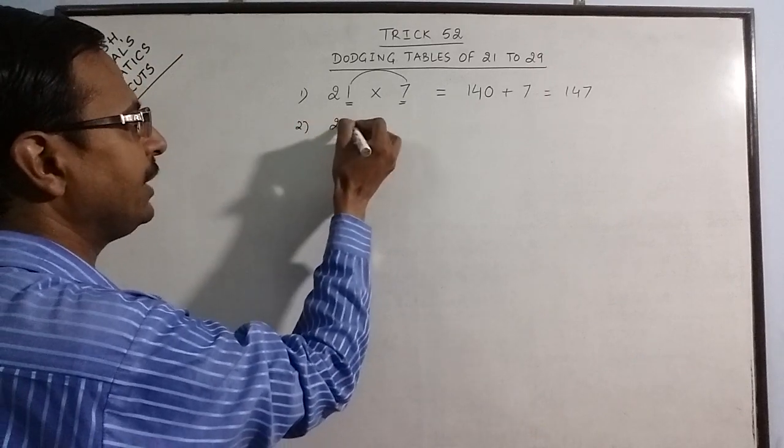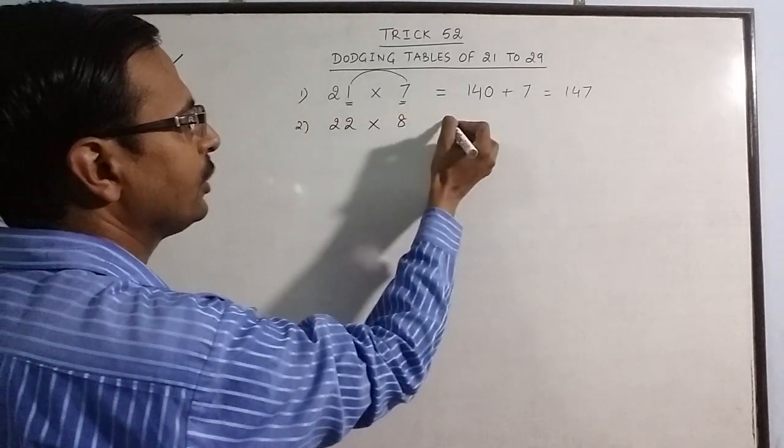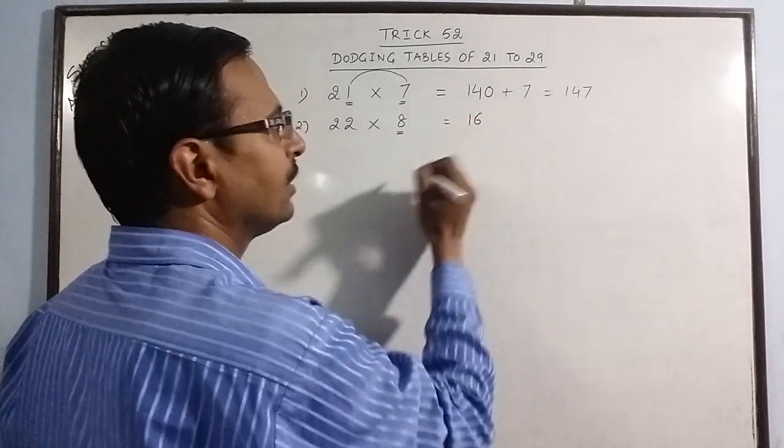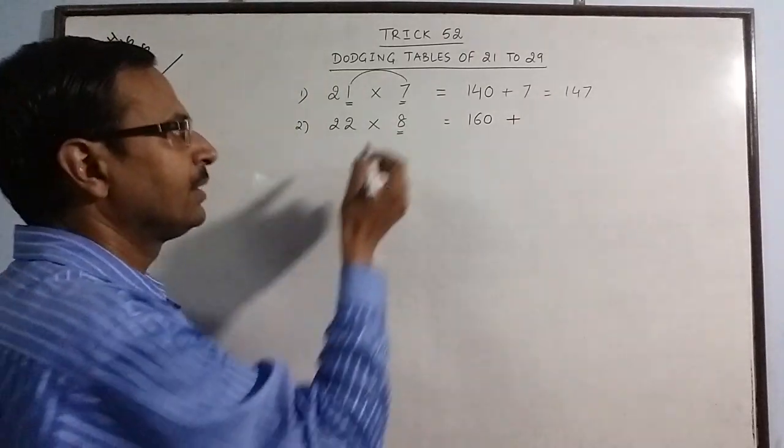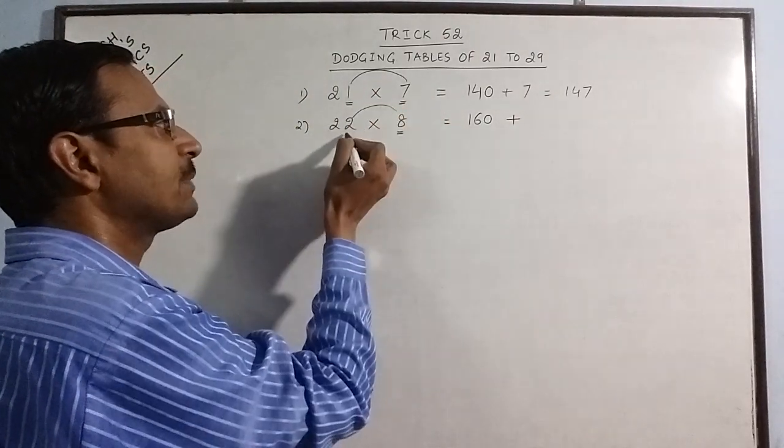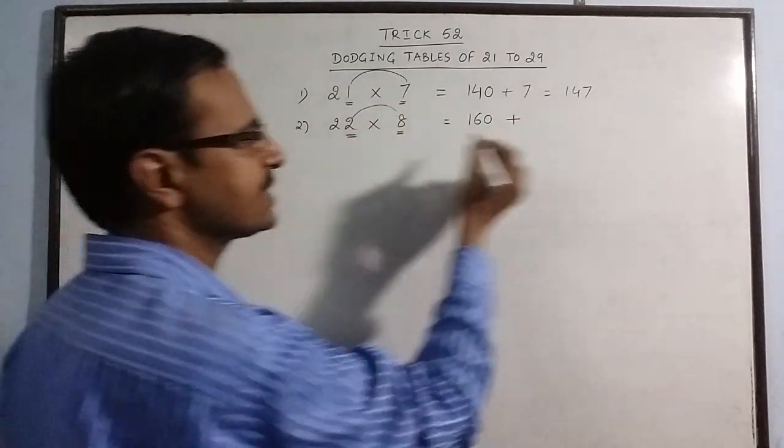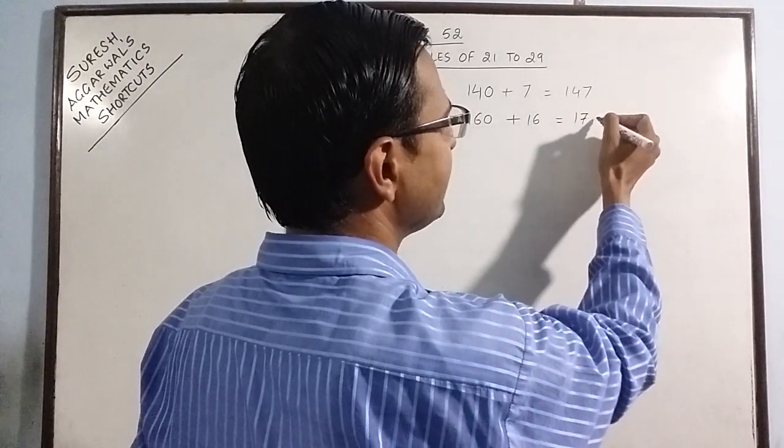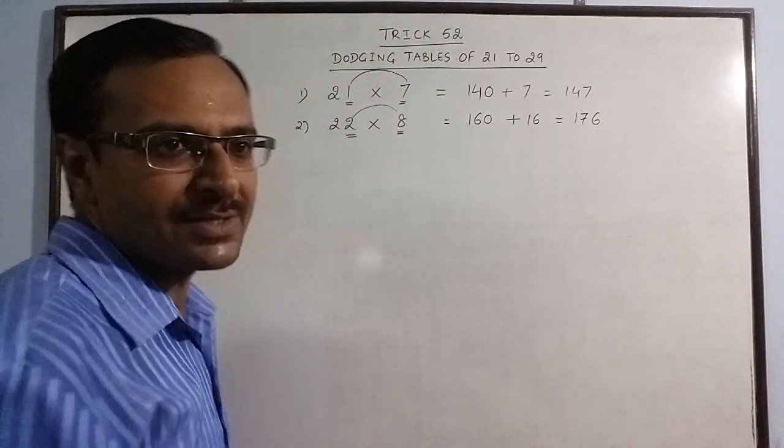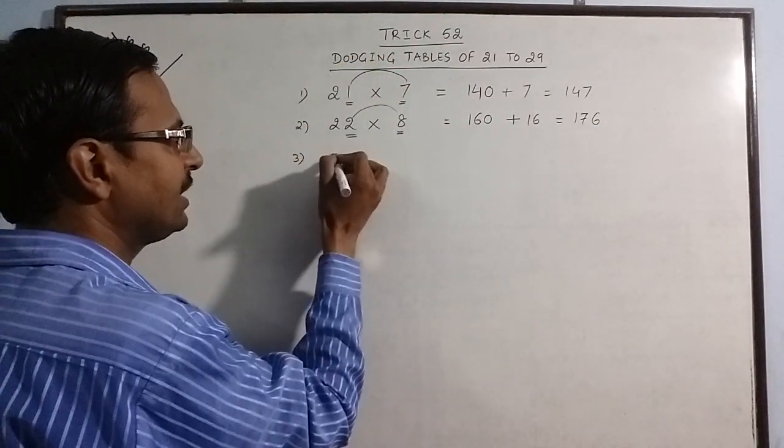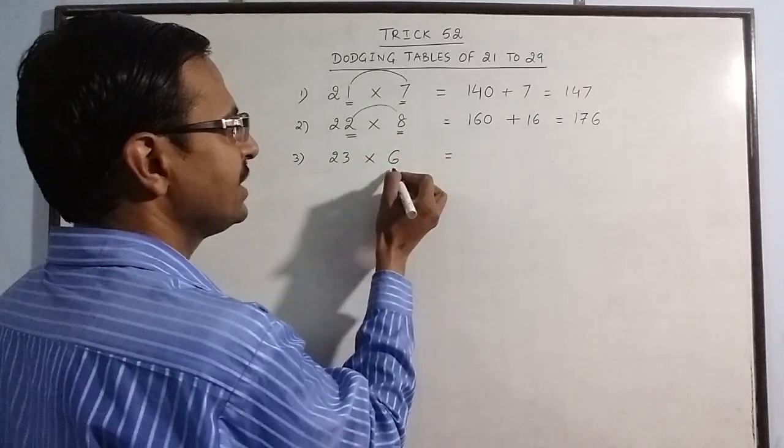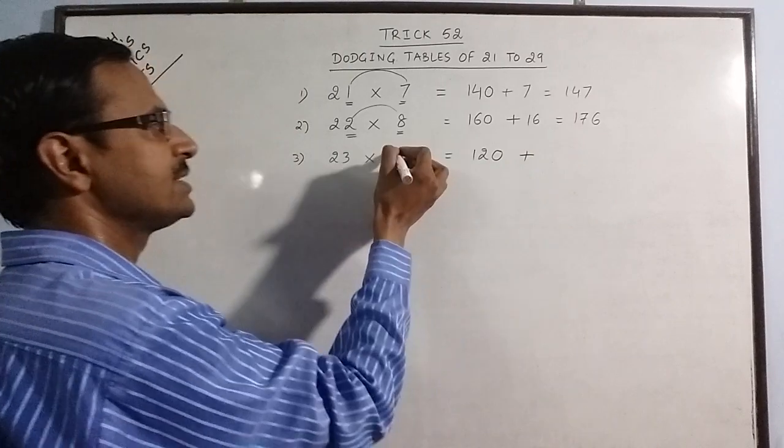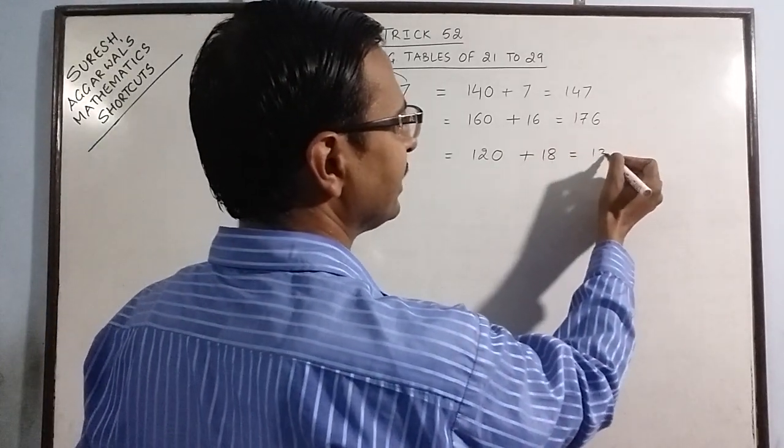More products through this method. Suppose we have 22 into 8. This number is to be doubled: 16, put a 0, and multiply this number with the units place here. 8 twos are 16. So 160 plus 16 is 176. Let's do more examples. We have 23 sixes. 6 twos are 12, put a 0, 6 threes are 18, just add: 138. Things become so simple.